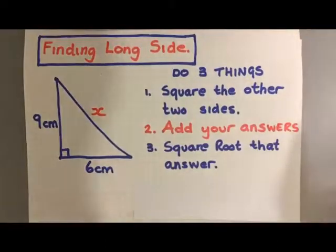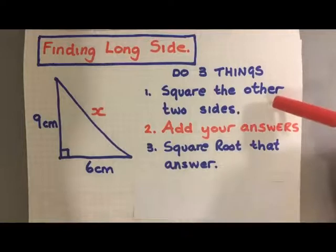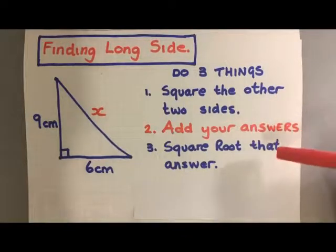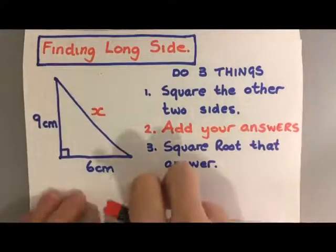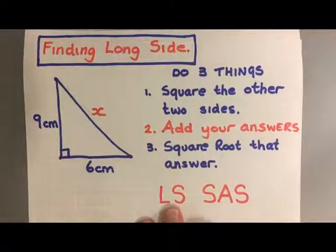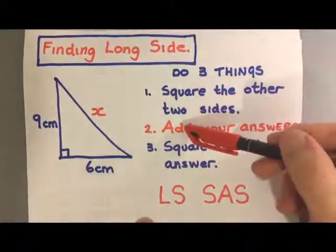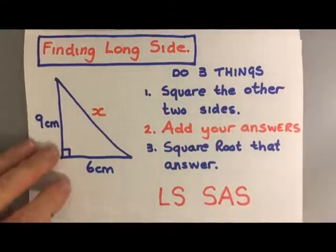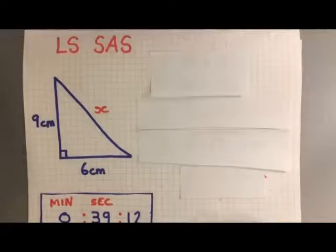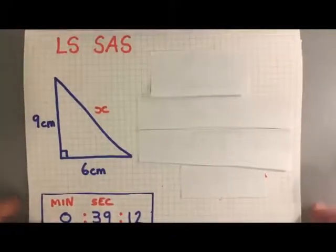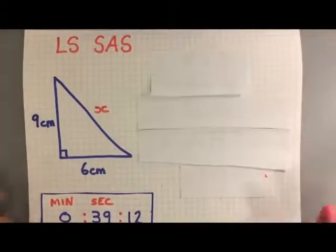Square the other two sides, add your answers, square root that answer. And I remember this as: we're finding the long side, we square, we add, we square root. Square, add, square root. Let's look at an example, same example as we had, but this time we'll actually do the maths.